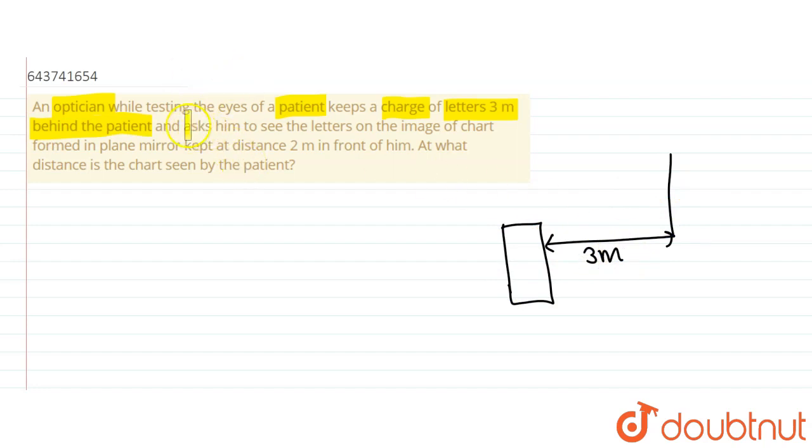What does it say? Ask him to see the letters on the image of the chart formed in a plane mirror kept at two meters in front of him. So where is the mirror kept? It is kept...